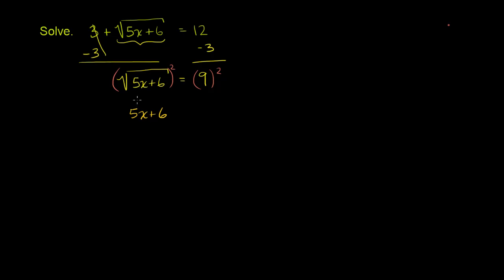And this is where we actually lost some information, because we would have also gotten this if we squared the negative square root of 5x plus 6. And so that's why we have to be careful with the answers we get, and actually make sure it works when the original equation was the principal square root. So we get 5x plus 6 on the left-hand side, and on the right-hand side, we get 81.